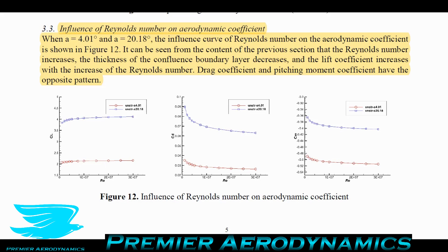For the moment coefficient, which is important for aircraft stability, the moment coefficient becomes more negative as Reynolds number increases at both angles of attack. This is generally favorable — it increases longitudinal stability, which is beneficial for transport and passenger aircraft. For high-maneuverability aircraft that's a different story, but for airliners this is a positive outcome.